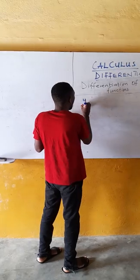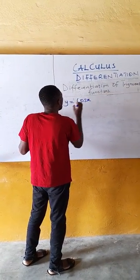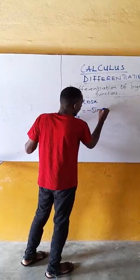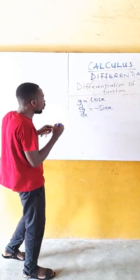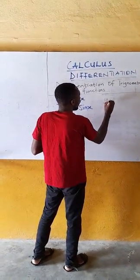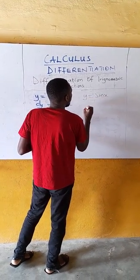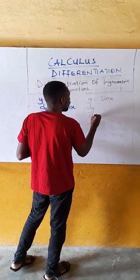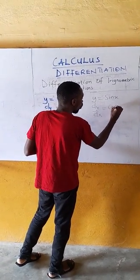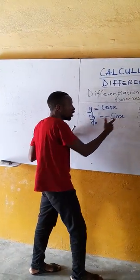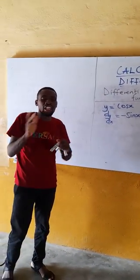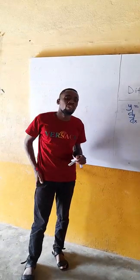Remember: if y equals cos x, then dy/dx equals negative sin x — very important, take notice. And if y equals sin x, then dy/dx equals cos x. The differential of cos is negative sin, but the differential of sin is cos. If you have these two basic identities, then any other trig differentiation will not be a problem.